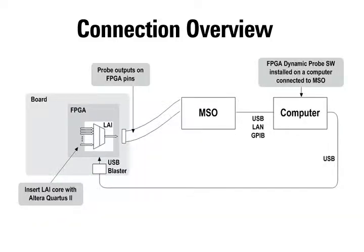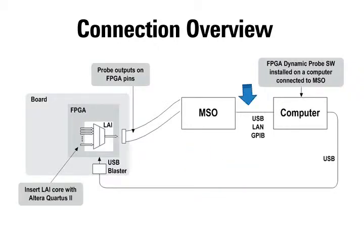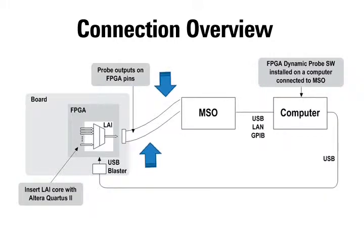This block diagram shows an overview of the connection between the DE2 board, the MSO, and the computer. The DE2 board is connected to the computer via USB blaster for FPGA configuration and dynamic signal bank switching by the MSO FPGA dynamic probe software. The MSO is also connected to the computer for reconfiguring the signal list when signal bank switching is performed. Signals at the FPGA to be observed are outputted through the expansion header pins at the DE2 board and connected to the MSO using the flying lead probes.